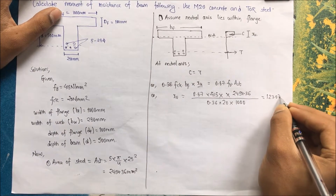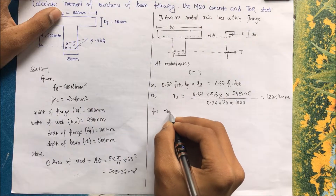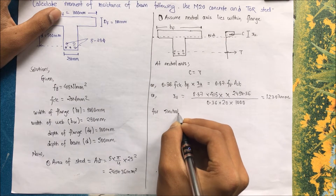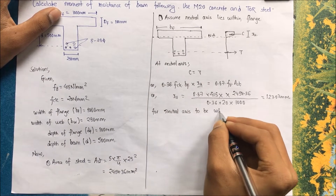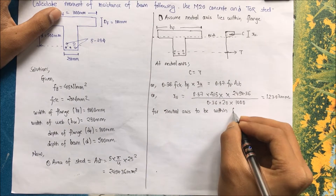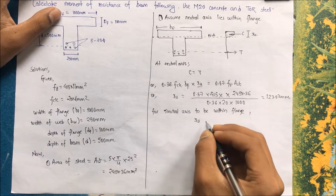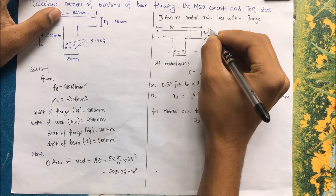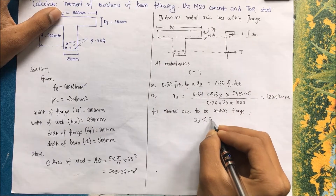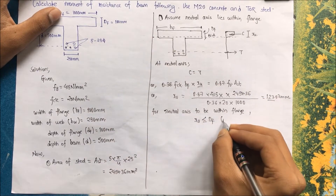This comes to XU = 123.07 mm. Now we check whether our assumption is correct. For the neutral axis to lie within the flange, XU must be less than or equal to DF. But XU is 123 mm and DF is 100 mm, so the assumption is not correct.